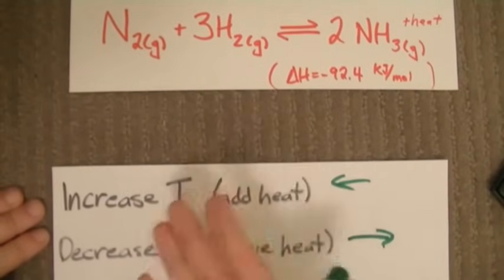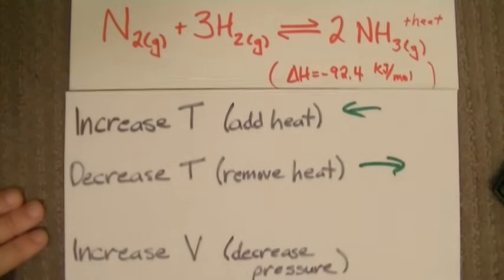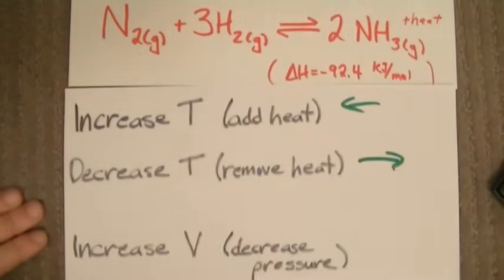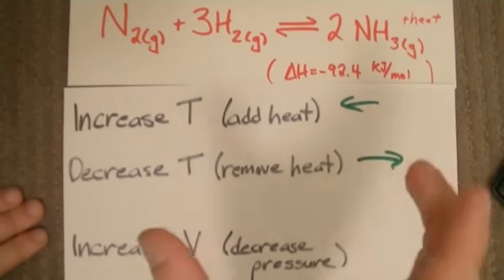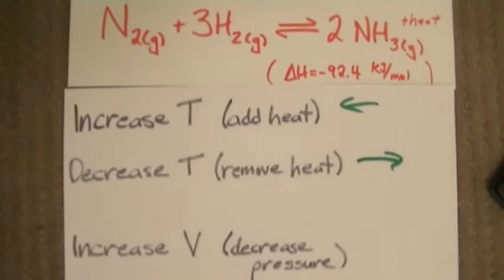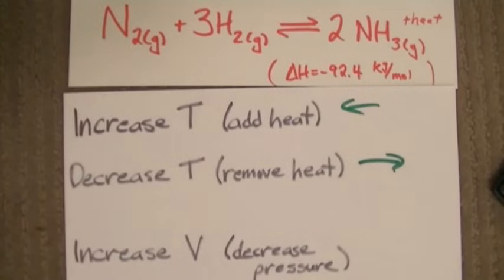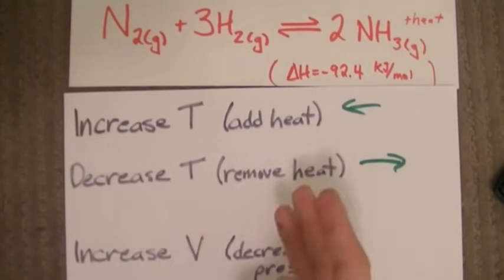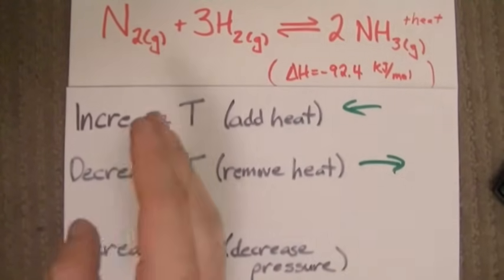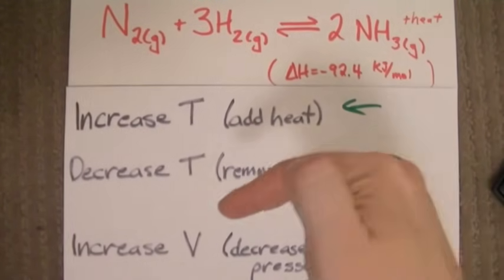Now, there are two other kinds of questions that teachers ask about Le Chatelier's principle. One of them is changing the actual volume of the container. If I increase the volume of the container, that decreases the total pressure inside the container. In order to alleviate that decrease in pressure, we want to increase the number of moles of gas in total inside the canister. When we increase the volume of a system, the equilibrium shifts to whichever side has more moles of gas, because more moles of gas will help increase the pressure, which alleviates the decrease in pressure that the increase in volume caused.